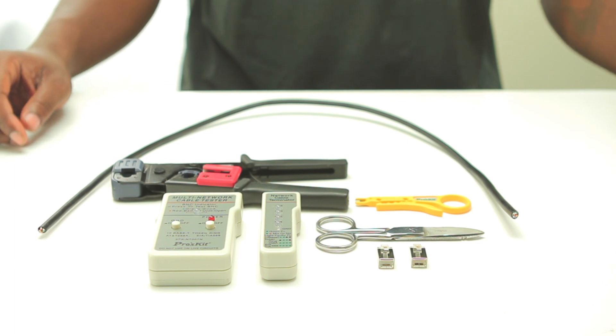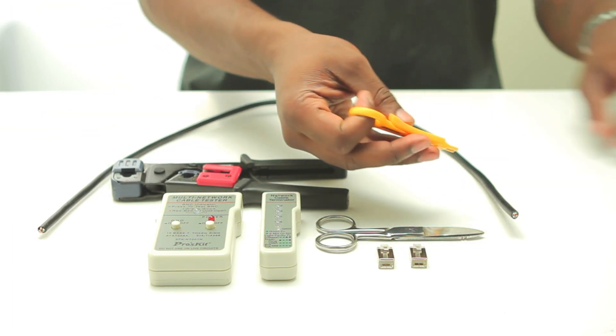The first step is to remove the jacket. Using my rotary strip tool I rotate it around the outside of the jacket that slices the jacket and allows it to easily be pulled off.